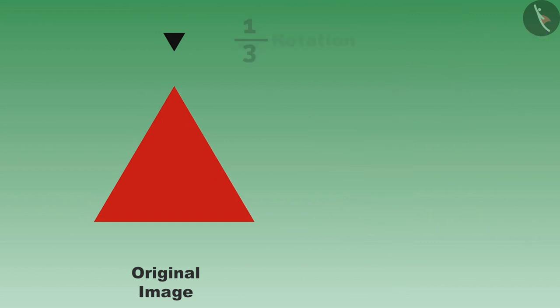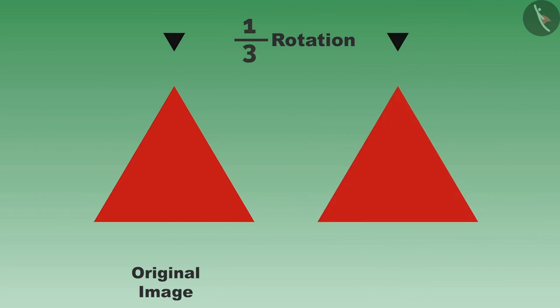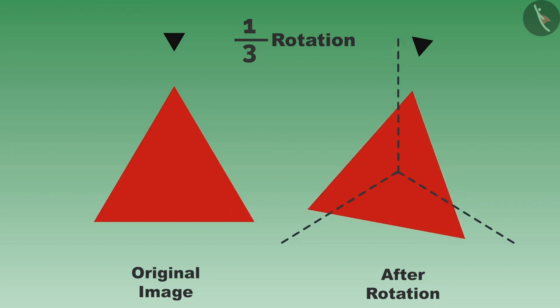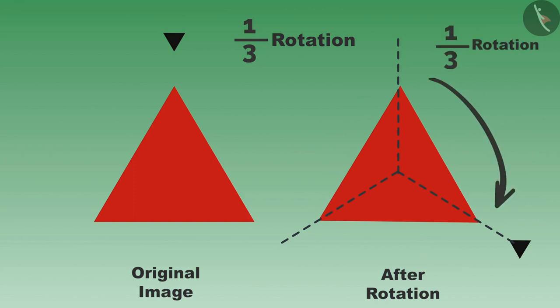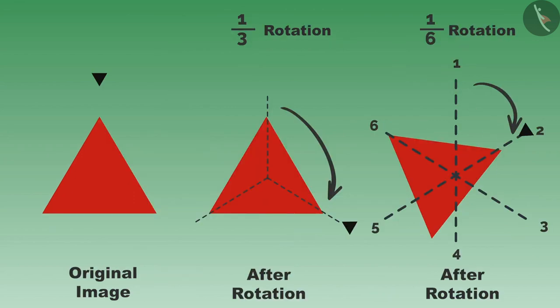If we have to do one-third rotation, we will divide it into three equal parts across the center. Draw the lines in this way. You can see the three lines passing through the center of this picture. Now rotate this picture in this manner and look at this one-third rotation.